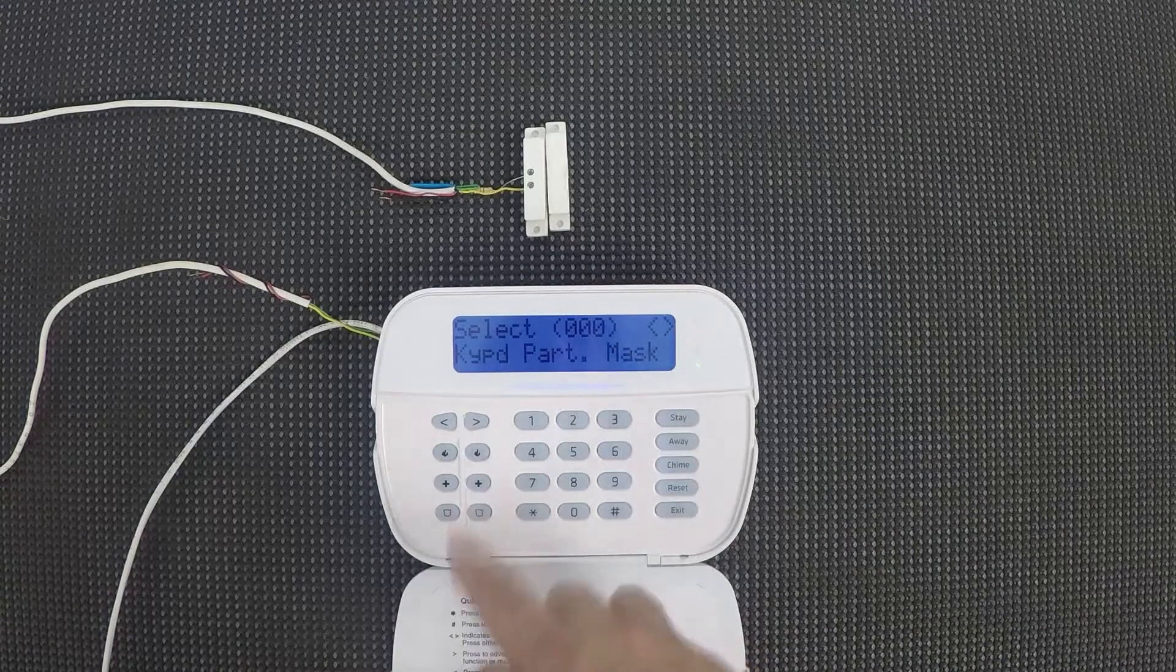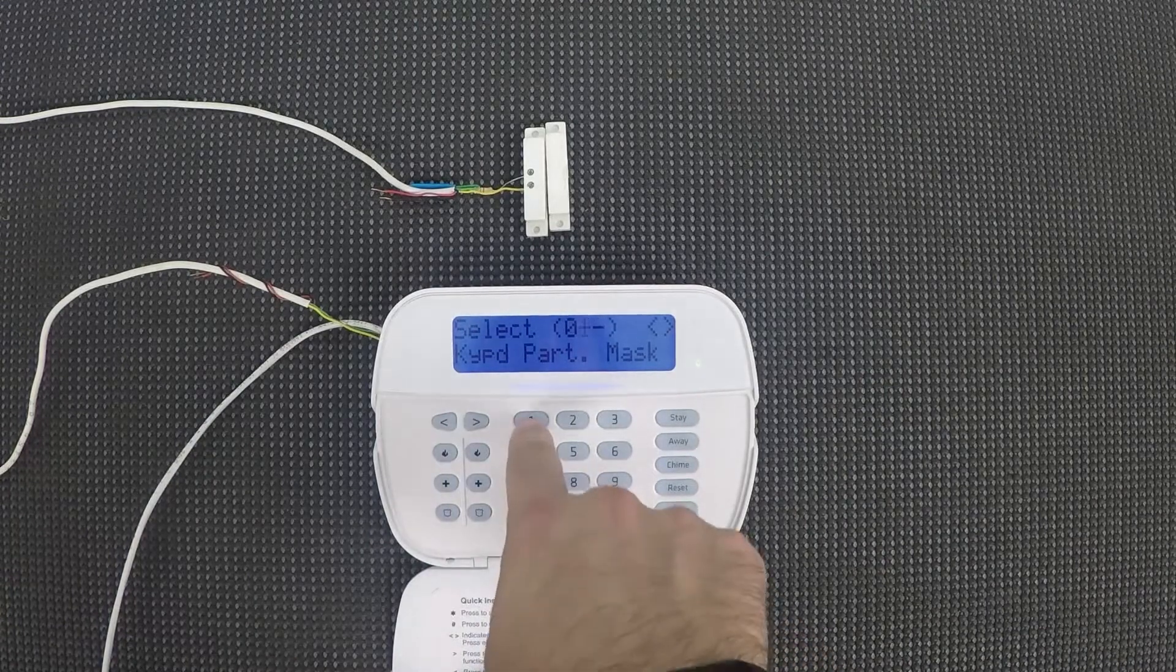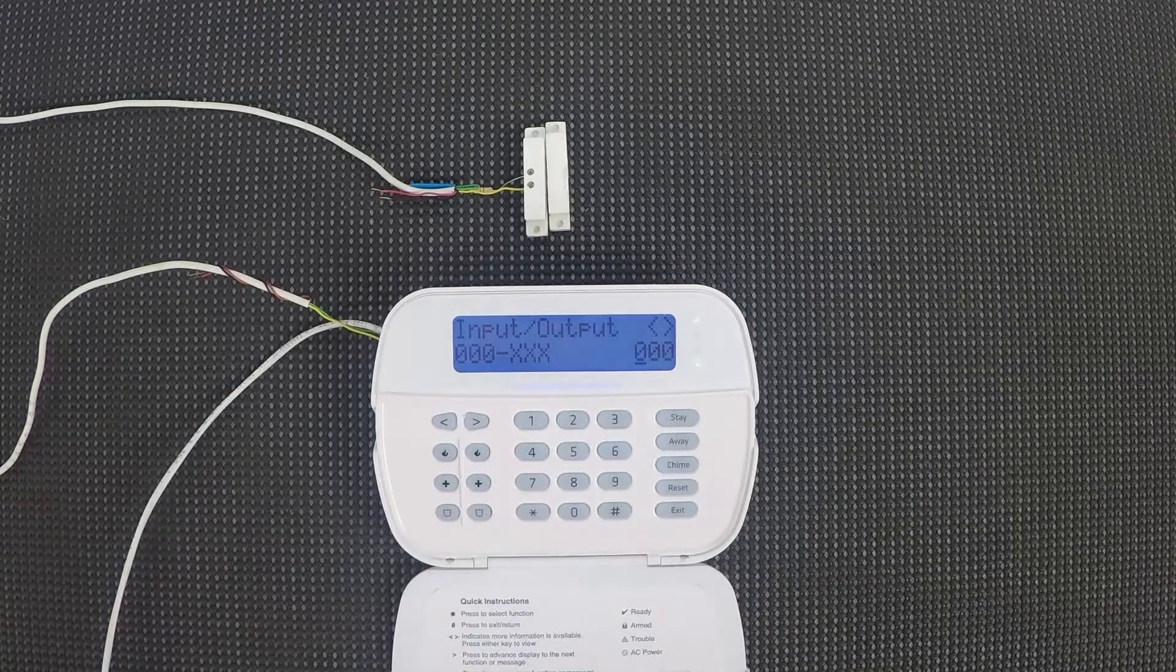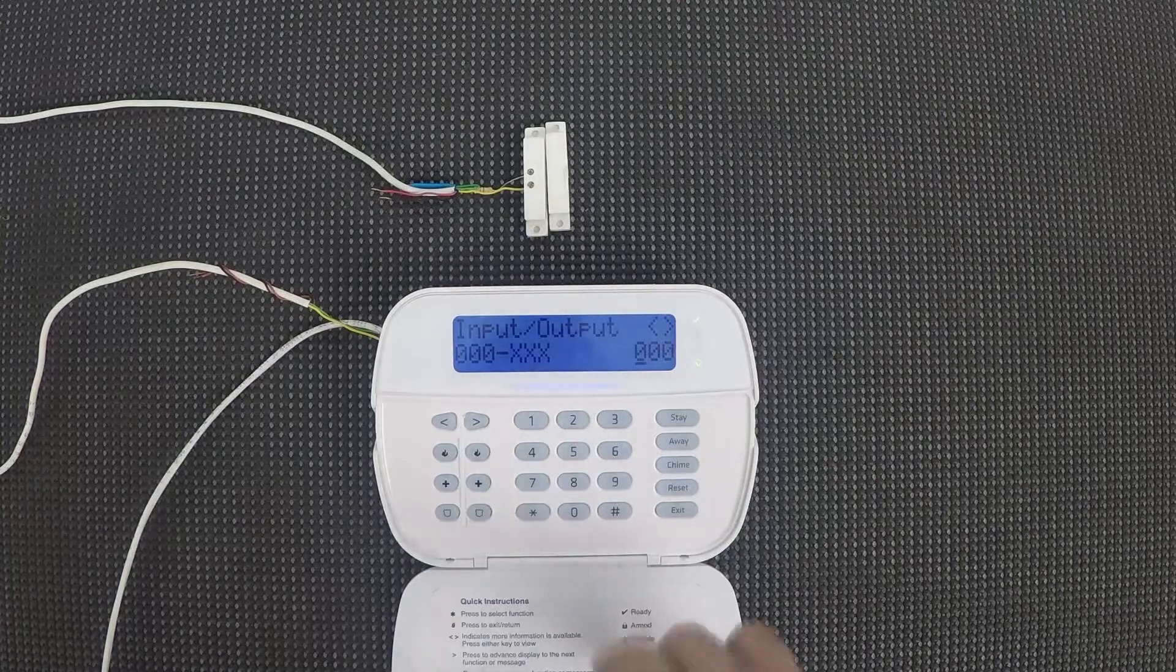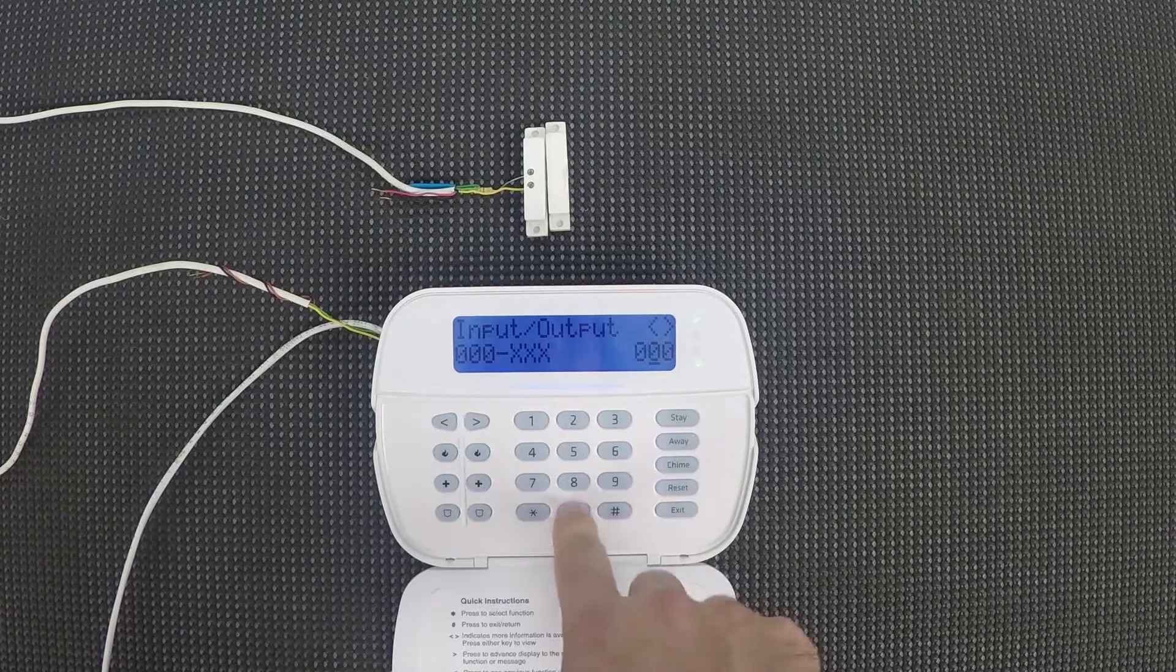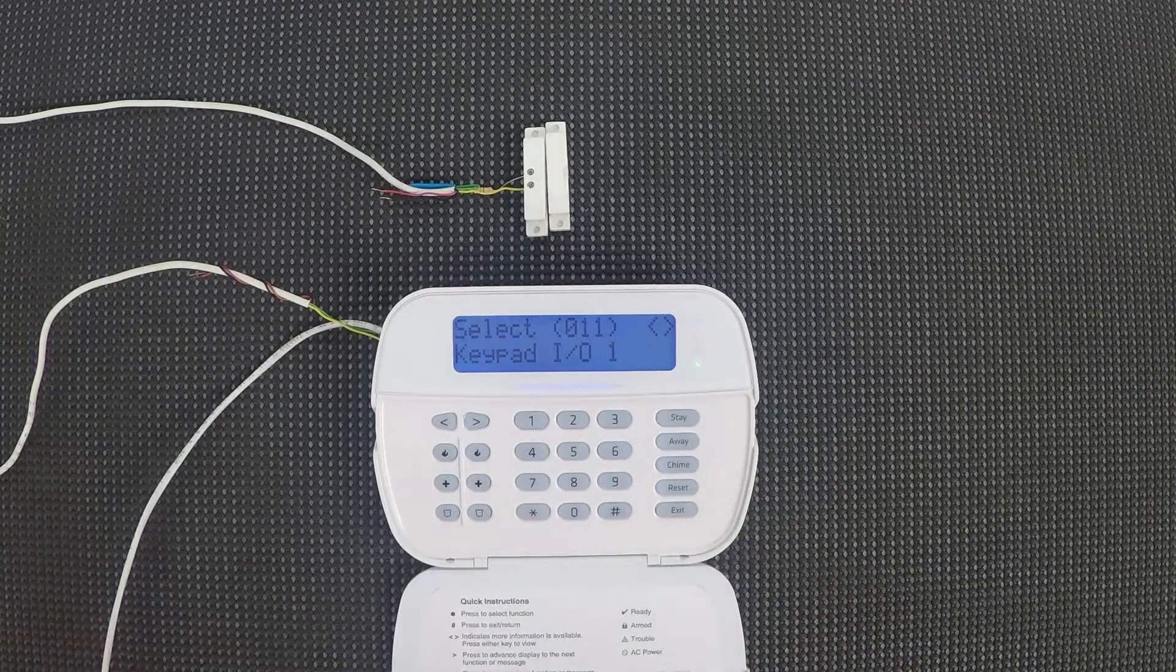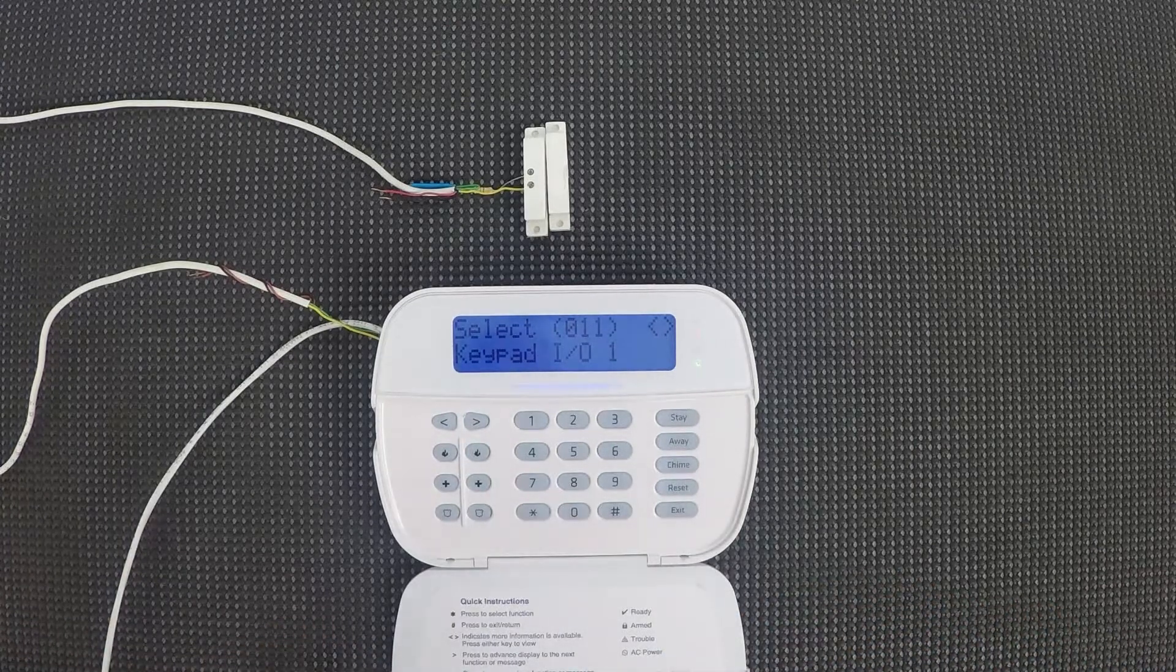So now there's a subsection that we're looking for. It's 011. This is our input output for this keypad. So we're going to make this zone nine. So we're going to enter the three-digit zone number, 009. If you're doing a PGM, you do the same thing. You just enter in the PGM number that you're going to make this.